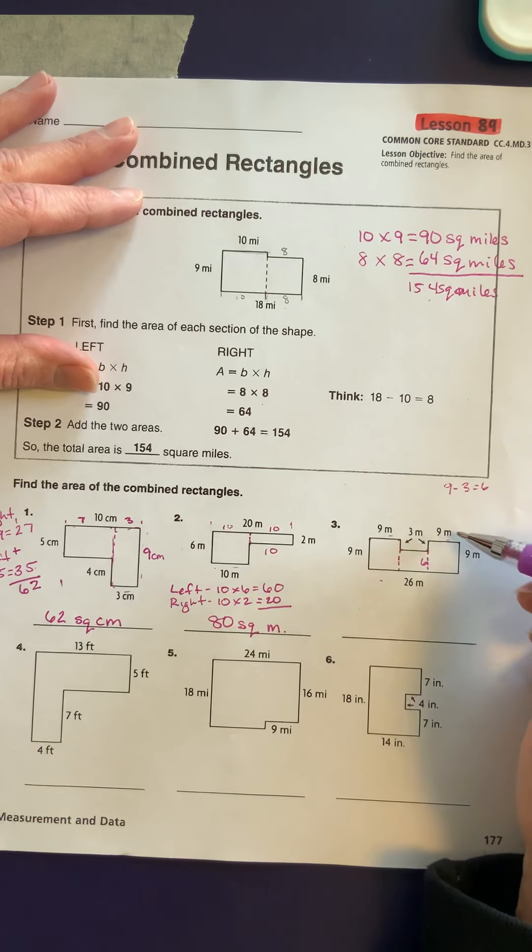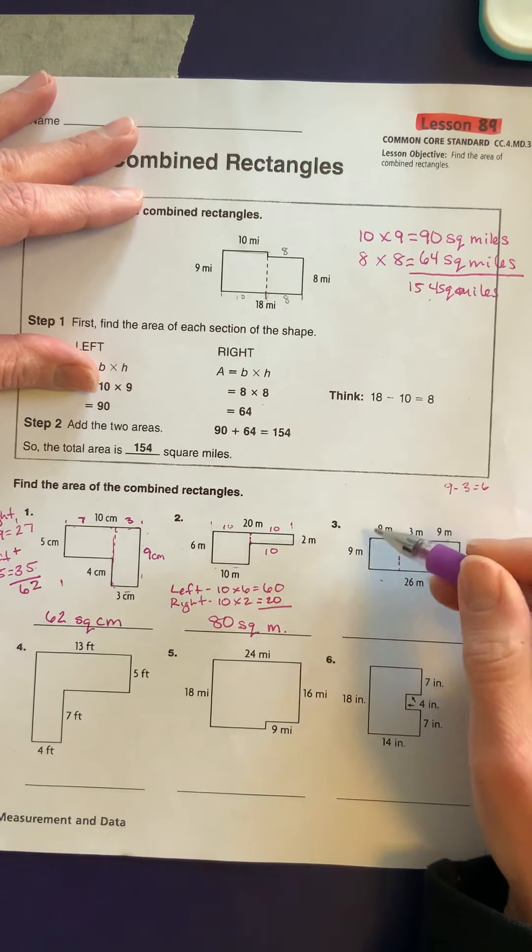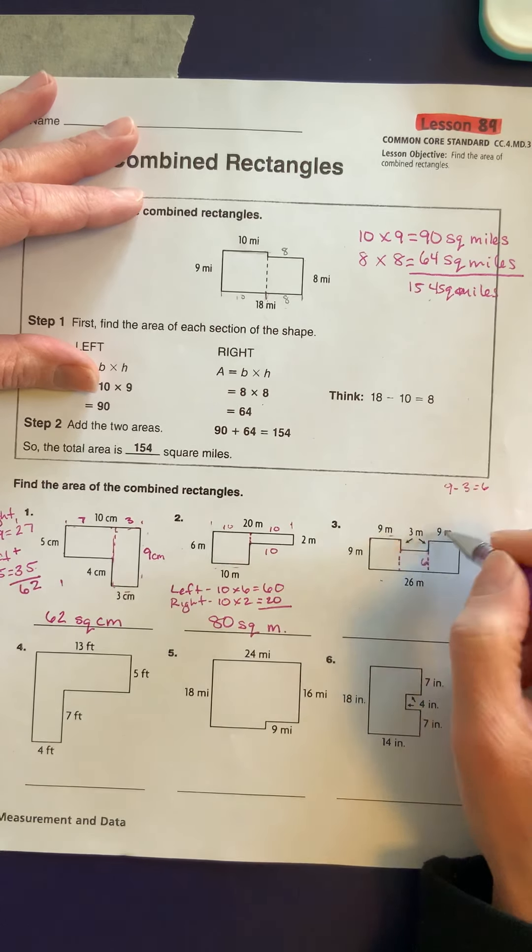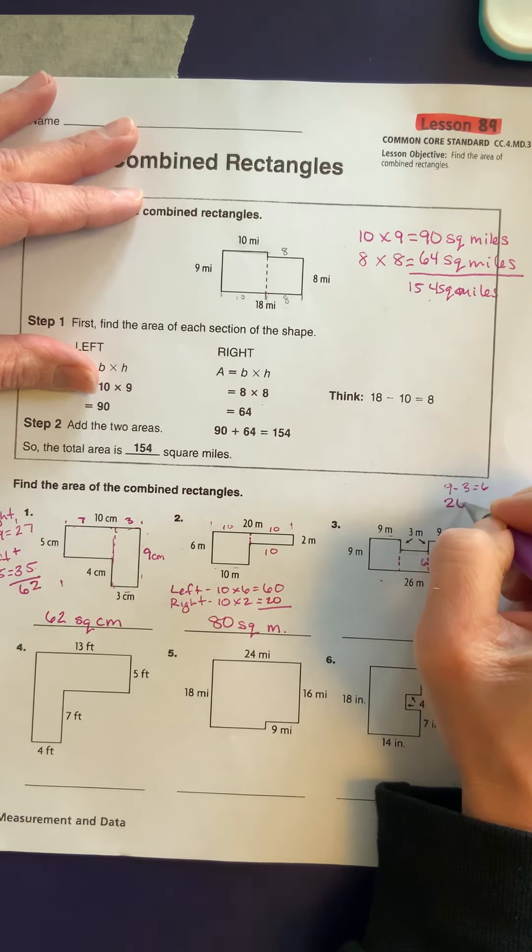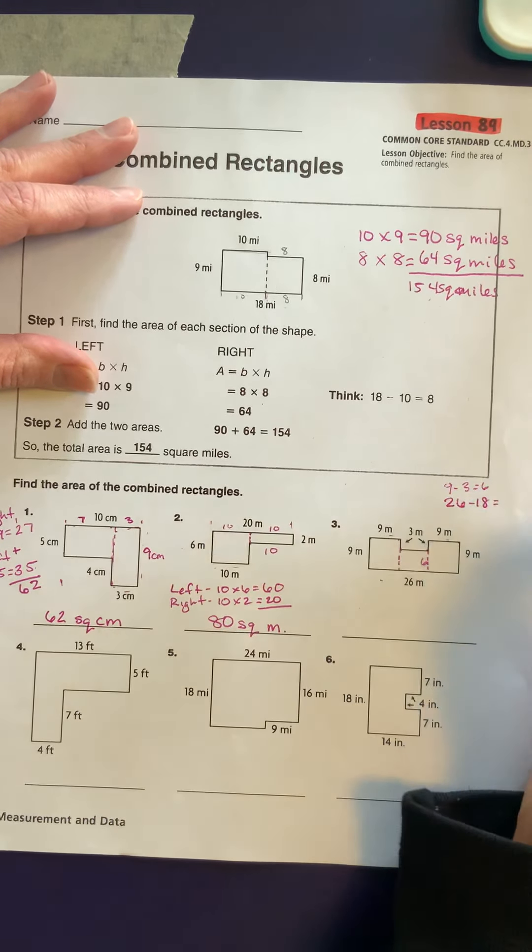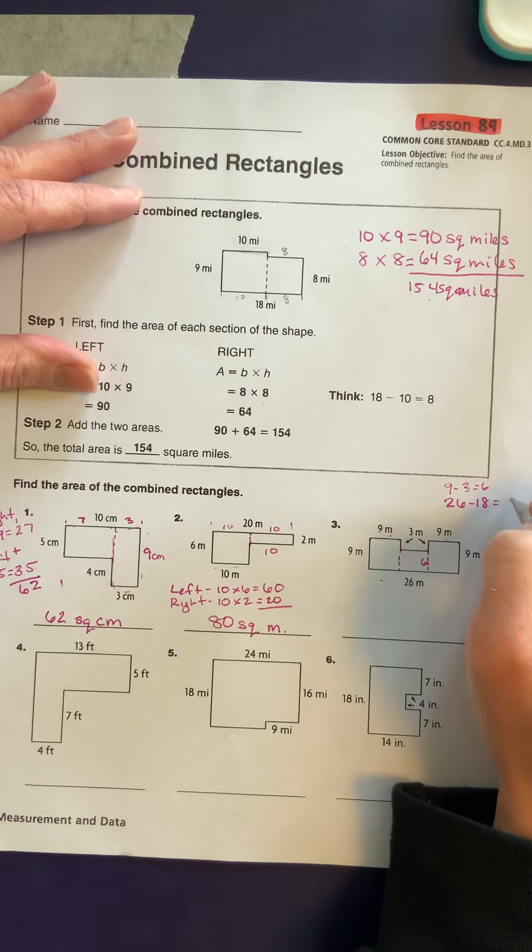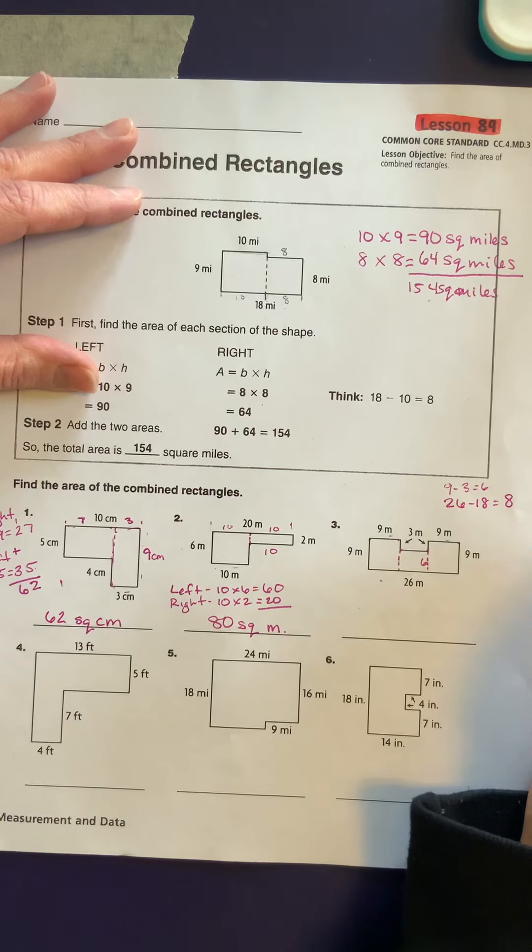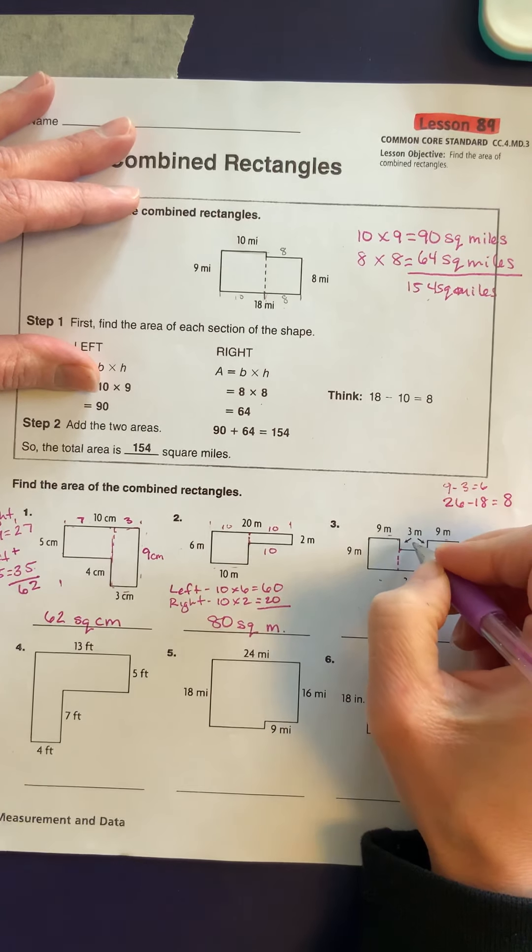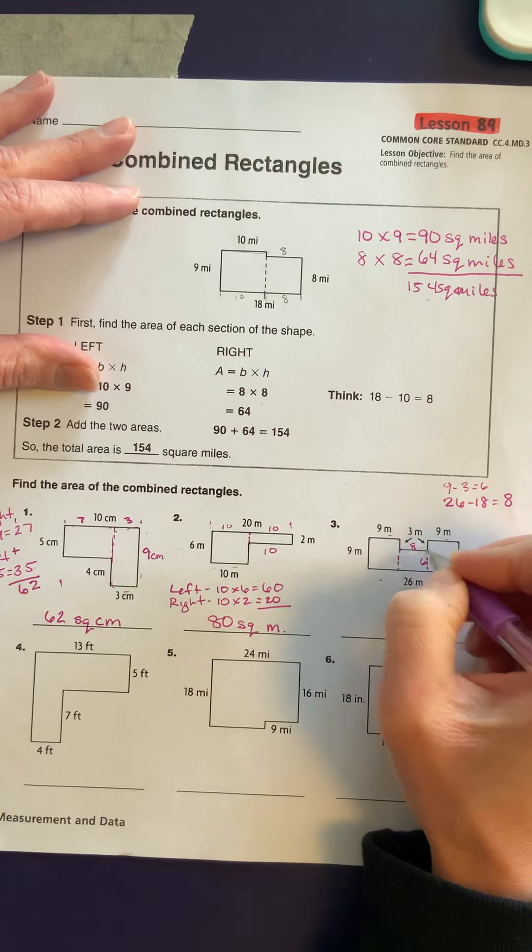So in order to find the distance from here to here, I would have to take 26 minus 9, and then that answer minus another 9, or I can add these two together to get 18, and take 26 minus 18, and I get 8. So from here to here is 8 meters squared.